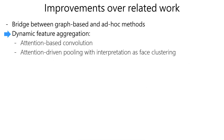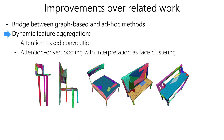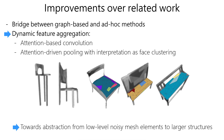Our approach performs dynamic aggregation by uniquely combining attention-based convolution from graph neural networks with mesh-specific task-driven pooling. These operations allow the network to often form clusters of faces which correspond to larger structures in a mesh, a particularly relevant direction to abstract from its low-level elements.